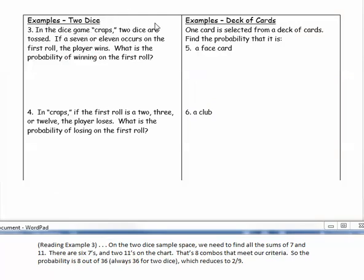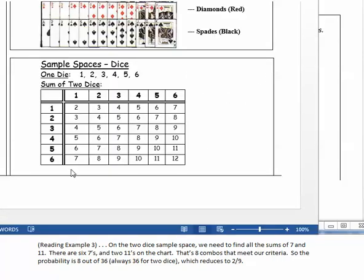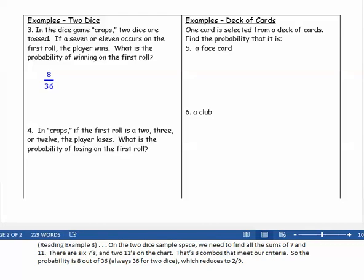Example three. In the dice game Craps, two dice are tossed. If a seven or eleven occurs on the first roll, the player wins. What is the probability of winning on the first roll? So on the two-dice sample space, we need to find all the sums of seven and eleven. There are 1, 2, 3, 4, 5, 6 sevens and 1, 2 elevens on the chart. That makes eight, six and two makes eight combos that meet our criteria. So the probability will be those eight, eight out of, always thirty-six for the denominator, eight out of thirty-six, which reduces to two-ninths.